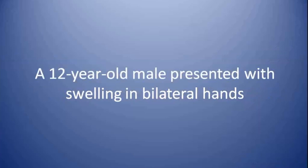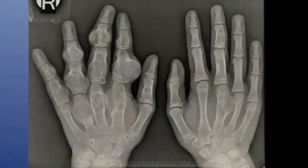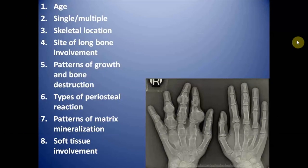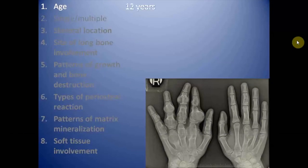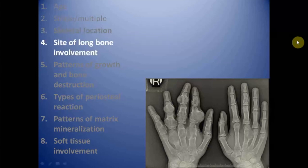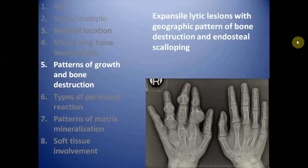McCune-Albright syndrome represents polyostotic fibrous dysplasia with skin pigmentation and precocious puberty. This is the case of a 12-year-old male who presented with swelling in bilateral hands. This is the AP radiograph of bilateral hands of the patient. Age is 12 years — a skeletally immature patient. The lesions are multiple. Skeletal location is the appendicular skeleton involving small bones of the hands. The site of involvement is metadiaphyseal. The lesions are expansile lytic lesions with geographic pattern of bone destruction and endosteal scalloping.